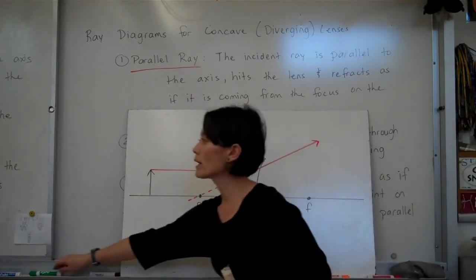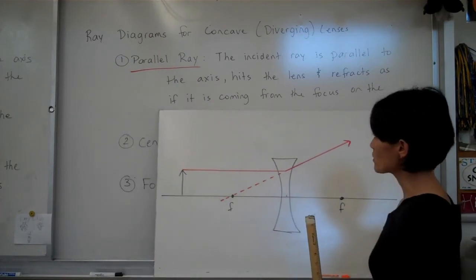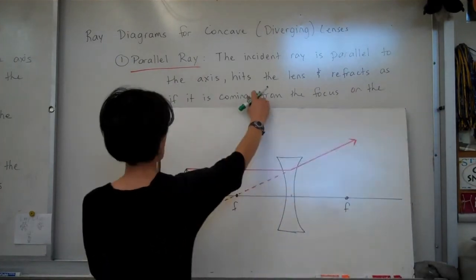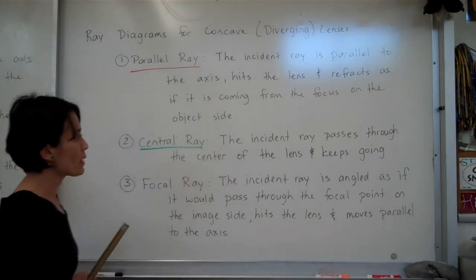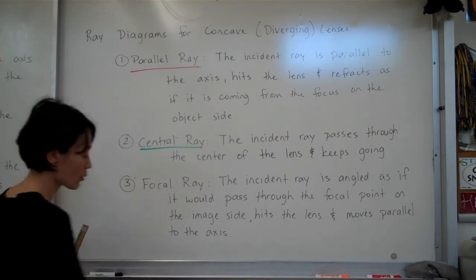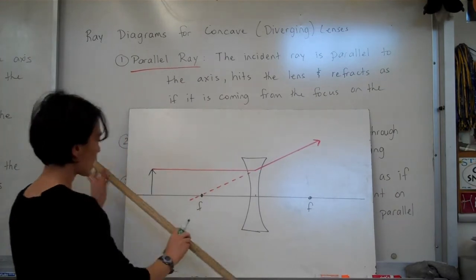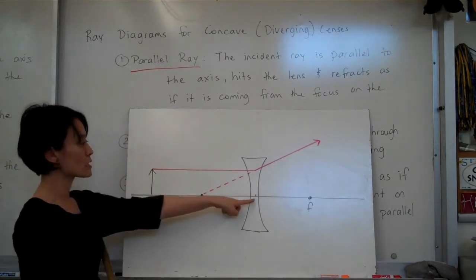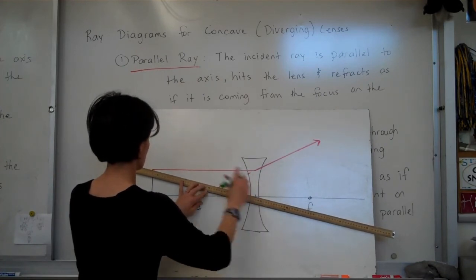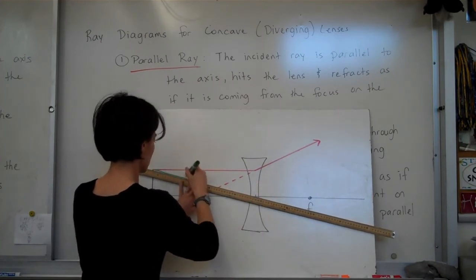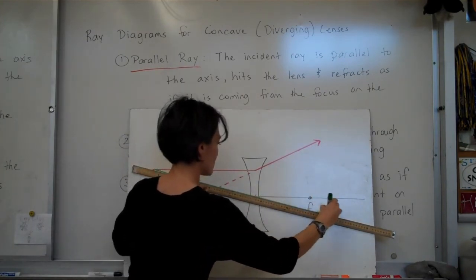The second ray is the central ray, same as for the convex lens. The incident ray passes through the center of the lens and just keeps on going — one of the easiest rays to draw. Line up the top of your object to the center of your lens and just keep on extending that line.